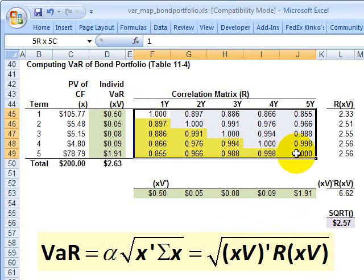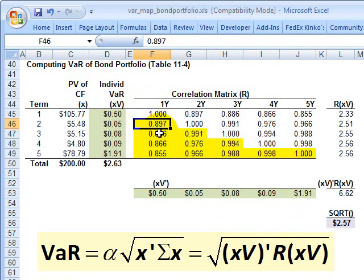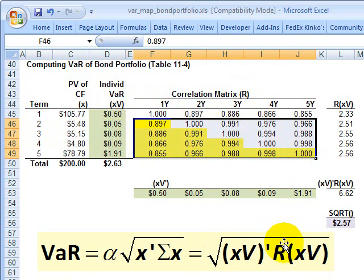And then we have the correlation matrix. We only need to input the triangles here, but for example, they're all pretty close to one. Here's the correlation between the second-year cash flow and the first-year cash flow. So that correlation matrix is the R here.